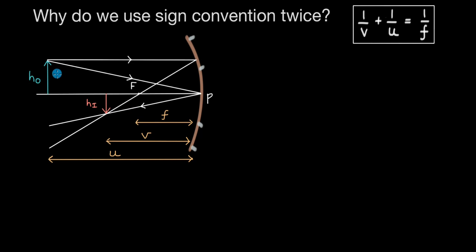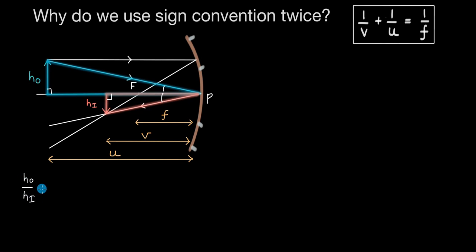For deriving the mirror formula, we look at similar triangles. We pick up the triangle in blue and the triangle in light red. These two triangles are similar because one angle is 90 degrees in both. This angle is 90 degrees, and these two angles — the angle of incidence and the angle of reflection — are equal by the law of reflection. Because the triangles are similar, corresponding sides are in the same ratio: H0 divided by HI equals U divided by V.